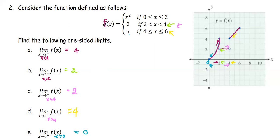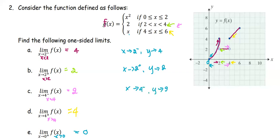To summarize: for part A, as x approaches 2 from the left, y approaches 4. For part B, as x approaches 2 from the right, y approaches 2. For part C, as x approaches 4 from the left, y approaches 2. For part D, as x approaches 4 from the right, y approaches 4. And for the last part, as x approaches 0 from the right, y approaches 0.